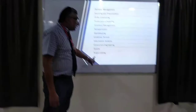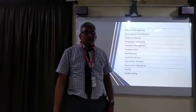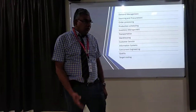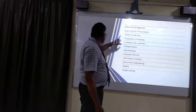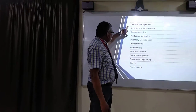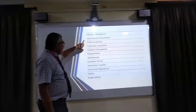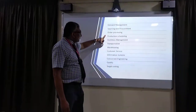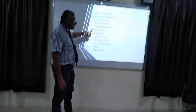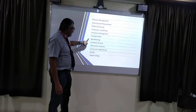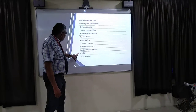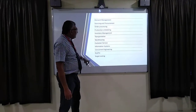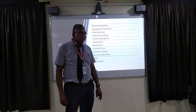The last element is the target customer — how your product matches the requirements of the customer. So all these come under supply chain management: demand management, sourcing and procurement, order processing, production, production scheduling, inventory, transportation and warehousing, customer service, information systems, concurrent engineering, and target customers. These are all the various elements in supply chain management.